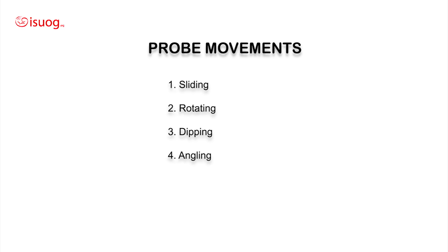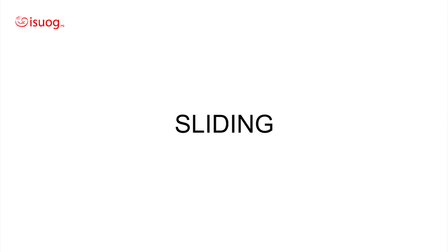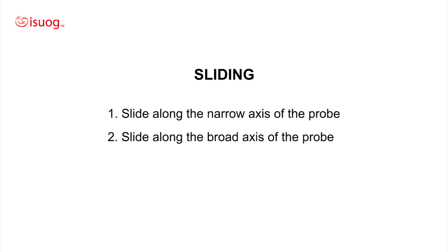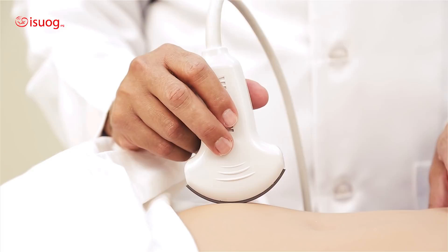The first probe movement I am going to demonstrate is sliding. There are two movements in sliding: the first is sliding along the narrow axis of the probe, and the second is sliding on the broad axis of the probe. I am going to start with the first one — sliding along the narrow axis. During my demonstration, I am always going to refer to this part of the probe as the narrow aspect of the probe.